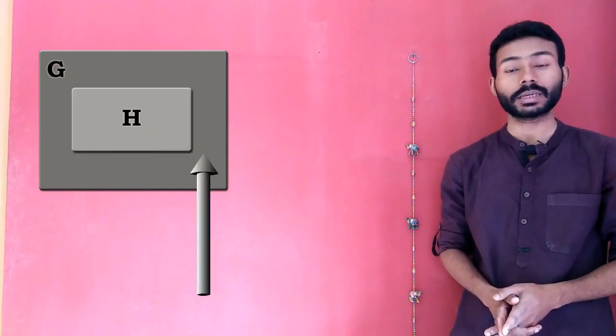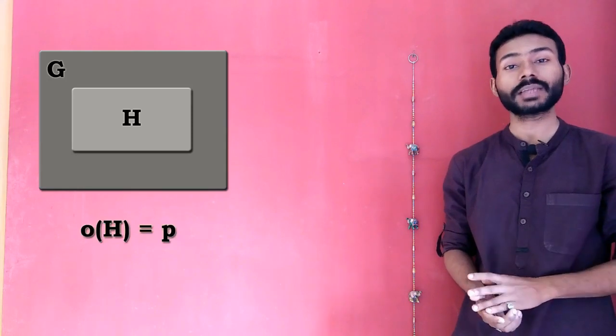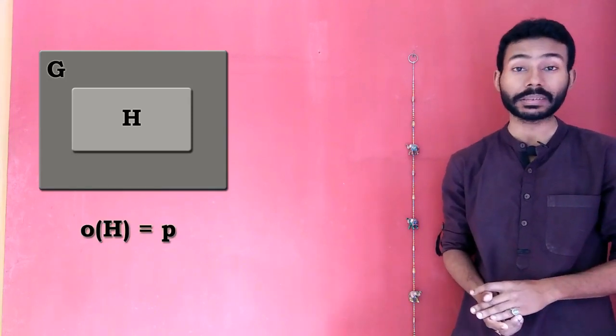A subgroup of a group is said to be a Sylow-P subgroup if the order of that subgroup is P, where P is any prime number.